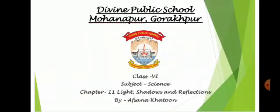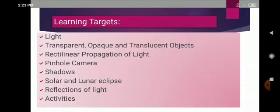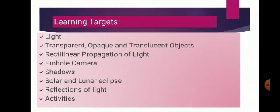In this chapter, we will discuss light, types of objects that are transparent, opaque and translucent, rectilinear propagation of light, pinhole camera, shadows, solar and lunar eclipse, and reflections of light and activities based on that.